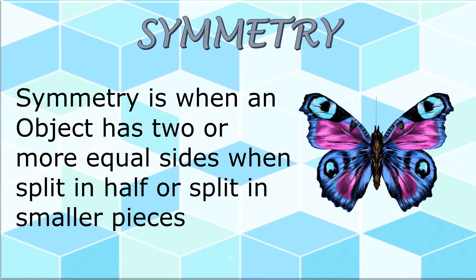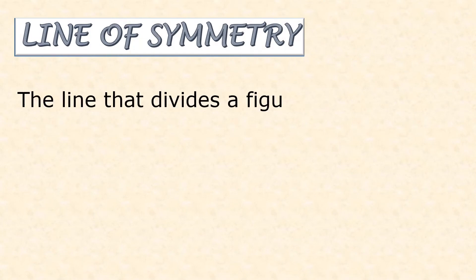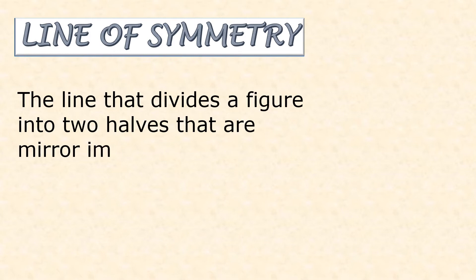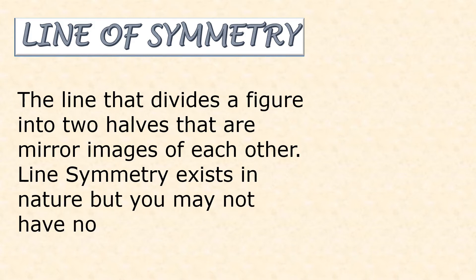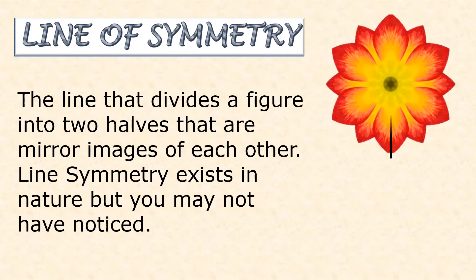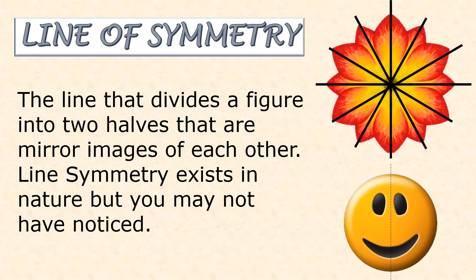Here we can see a butterfly which has been split into two halves by a line of symmetry. The line of symmetry is the line that divides a figure into two halves that are mirror images of each other. Line symmetry exists in nature but you may not have noticed. This flower has six lines of symmetry, while this smiley face has only one line of symmetry.